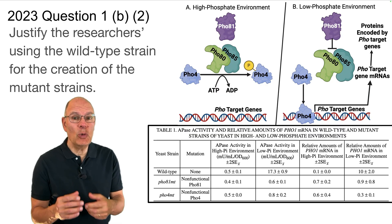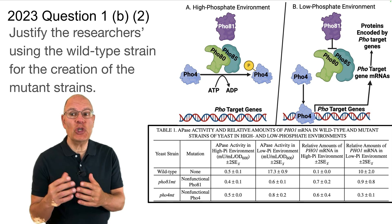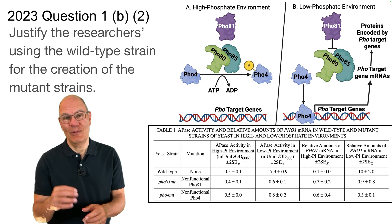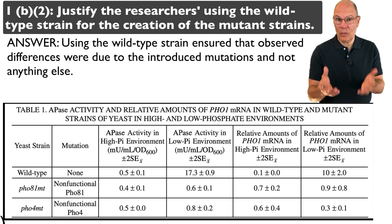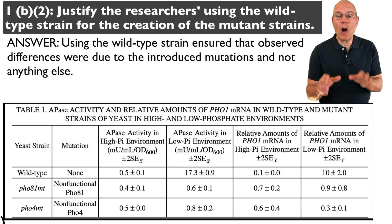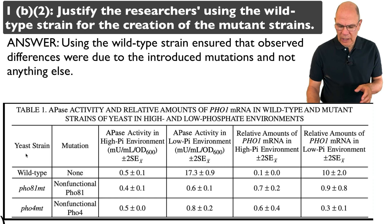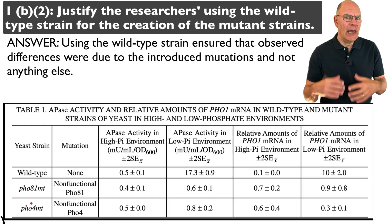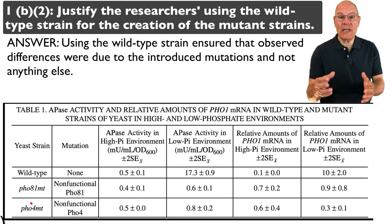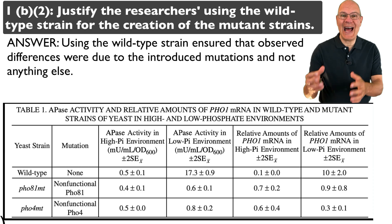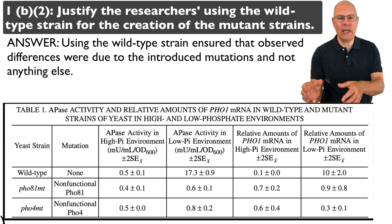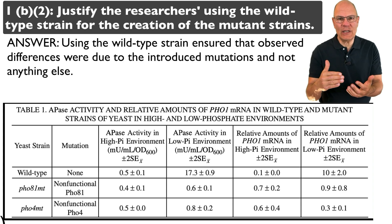Question 1b, Part 2: Justify the researchers using the wild type strain for the creation of the mutant strains. Using the wild type strain ensured that the observed differences were due to the introduced mutations and not anything else. The wild type strain is the strain found in nature — it's not mutated — so if you want to create mutations, you start with wild type, mutate it, and then you can see the effect of the mutations.